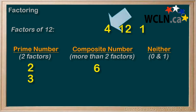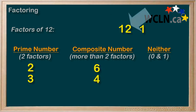Now, 4. We can remember that 2 times 2 equals 4. Thus, 4 times 1 and 2 times 2 are both ways to get 4, giving us more than two factors — so 4 is a composite number. And 12 itself: we've already identified that 12 has 6 factors, so it must be a composite number.